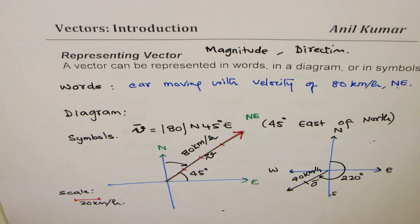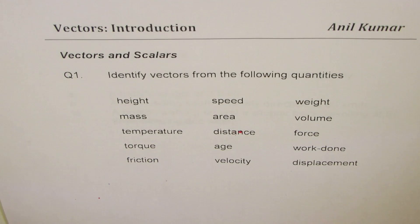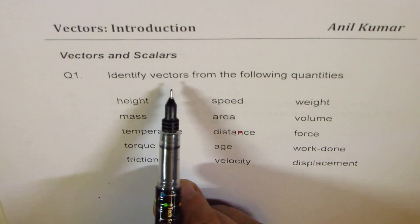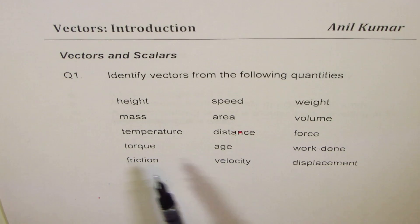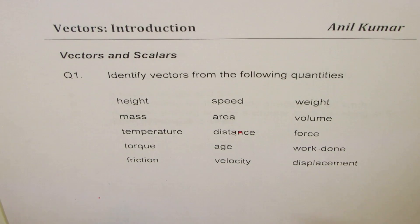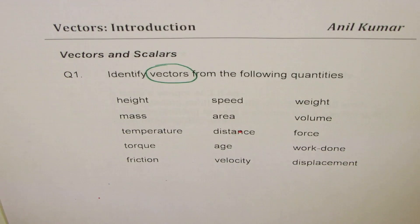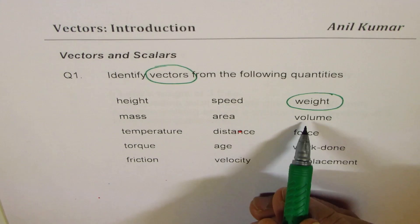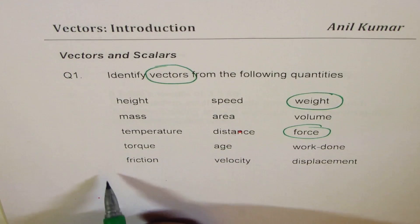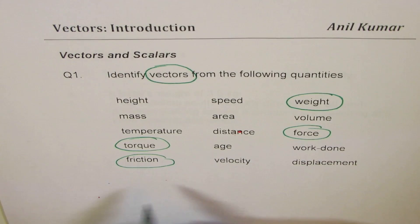Here's a small quiz. Question one: identify vectors from the following quantities — height, speed, weight, mass, area, volume, temperature, distance, force, torque, age, work done, friction, velocity, displacement. In the first line: height is scalar, speed is scalar, weight is a vector, mass/area/volume are all scalar, temperature is scalar, distance is scalar, force is a vector, torque is a vector, age and work done are scalar, friction is a vector, velocity is a vector, and displacement is also a vector.